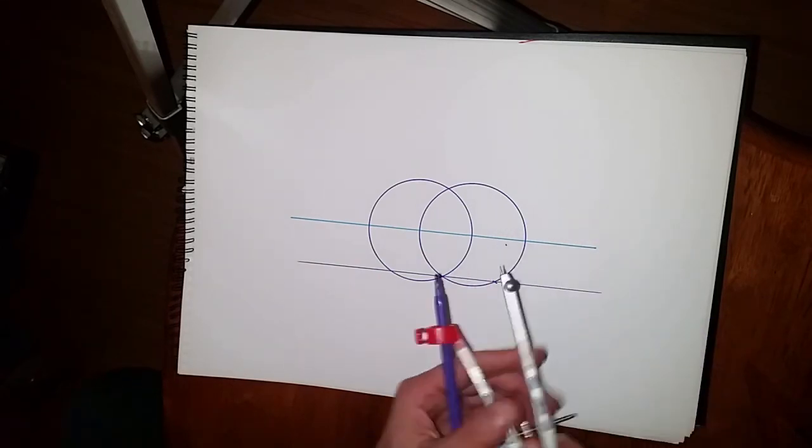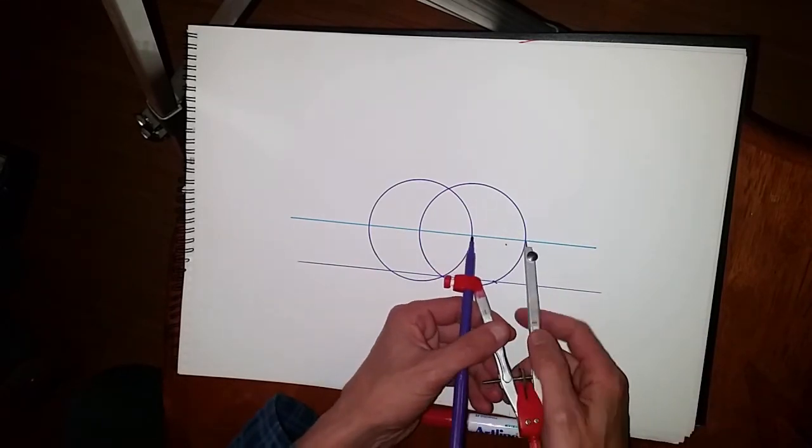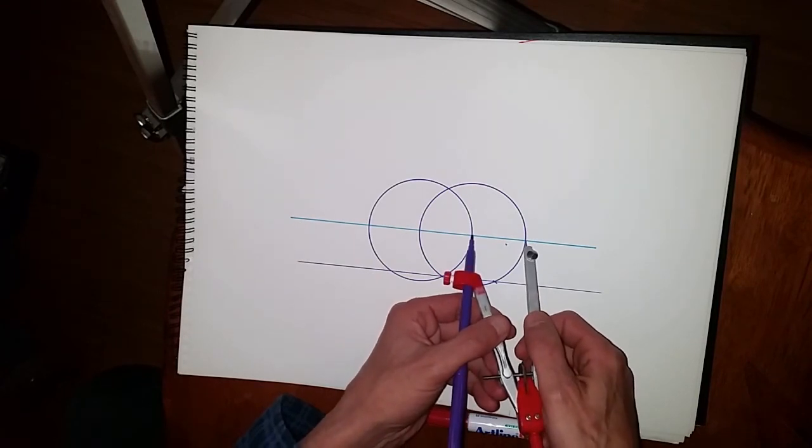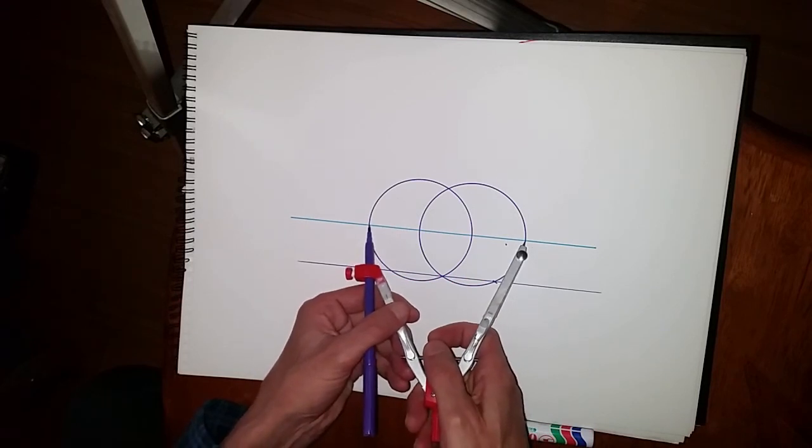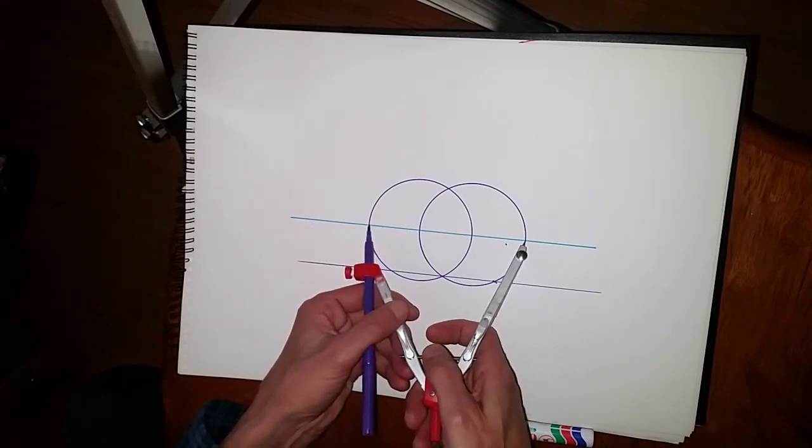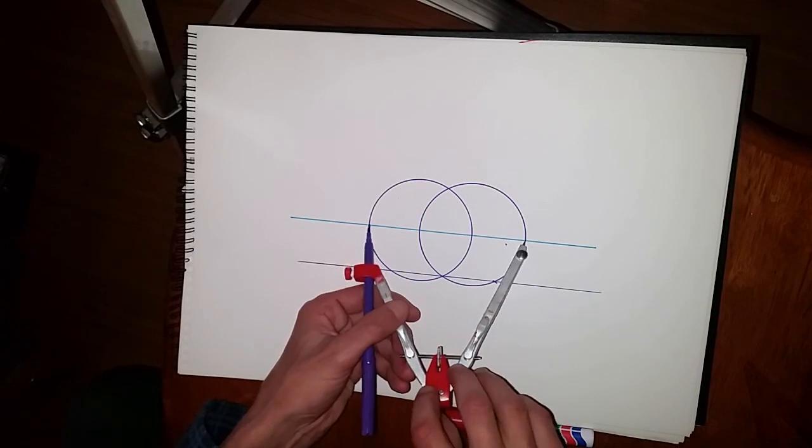And now what we need to do is change the size of our compass. So set it to the one edge of the Vesica and then we need to adjust it to the sides there. Try and get it as accurate as we can.